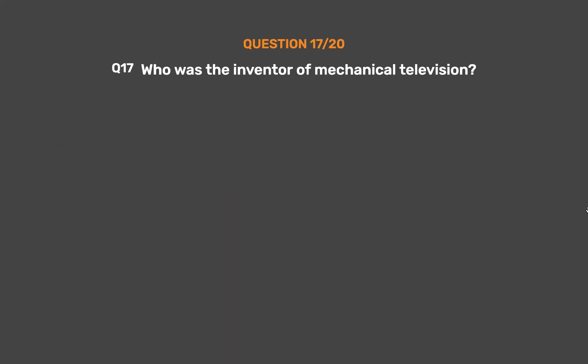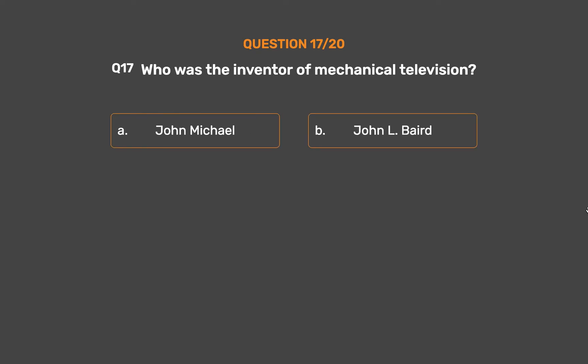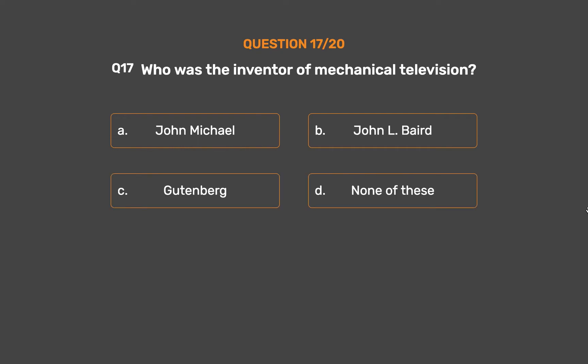Question number 17. Who was the inventor of mechanical television? Option A: John Michael. Option B: John L. Baird. Option C: Gutenberg. Option D: None of these.